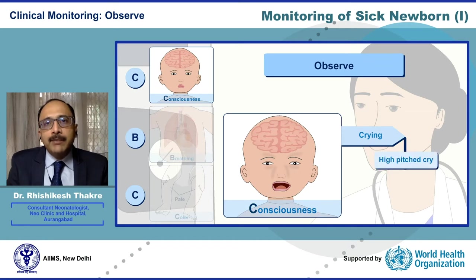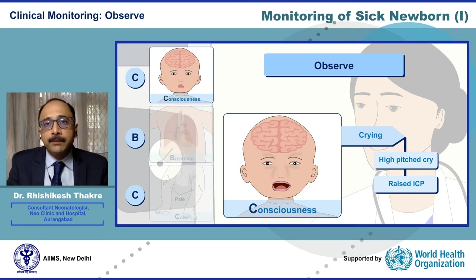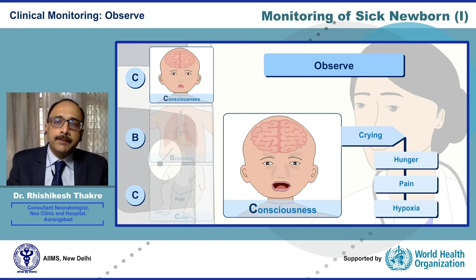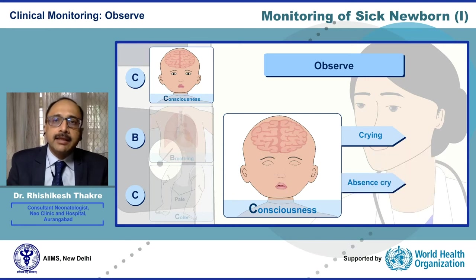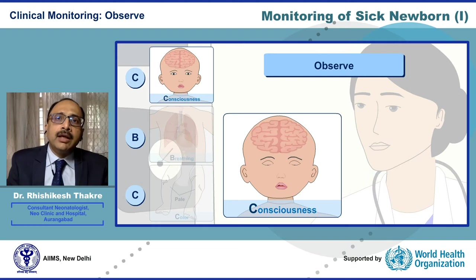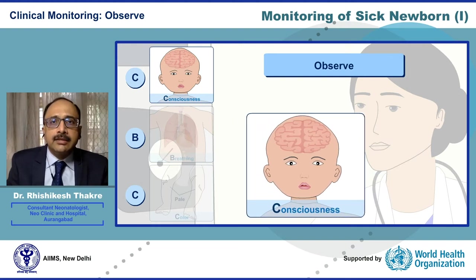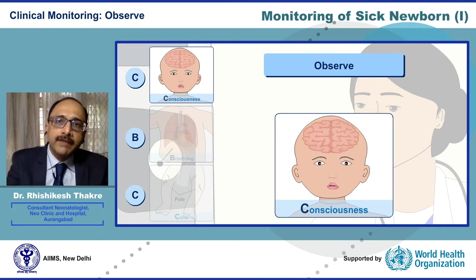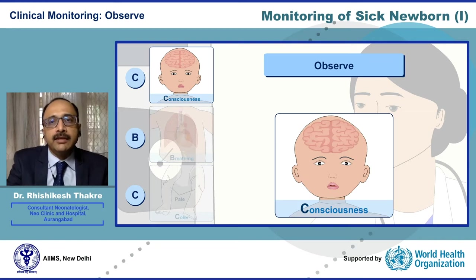A baby who has a high-pitched cry tells you that there is raised intracranial pressure. A cry is a call for help — it tells us that there is a possibility of underlying hunger, pain or hypoxia. And last but not the least, an absent cry is ominous. In short, Consciousness gives us a window to the brain and thus helps assess the intactness of the central nervous system.